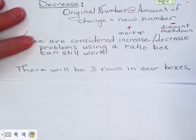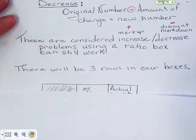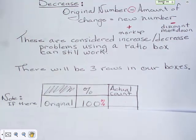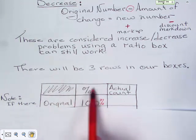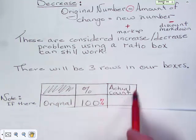Now in our boxes to work these there are going to be three rows. You have this first row, the percent row, and then the actual count.